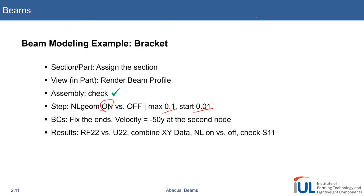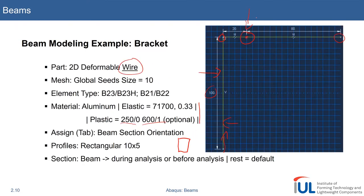And then we can, for example, the results analysis, we will look at the stresses, we will see the difference between NLgeom on and off. But I will also show you how to combine XY data. That means, in this case, we, for example, we will, from this feature point, we are again talking about this feature point, we will get the reaction force.